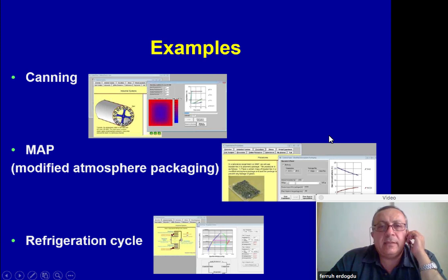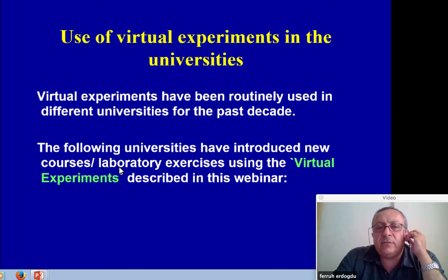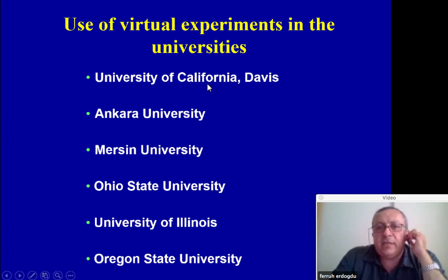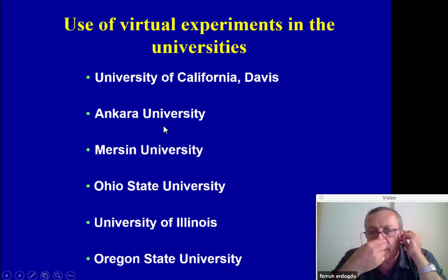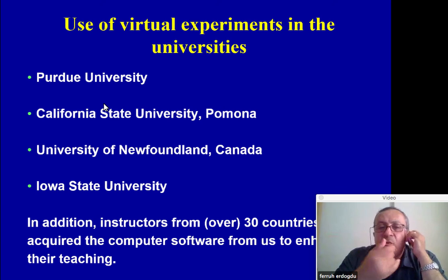Going back to the presentation after these demonstrations: these virtual experiments have been routinely used in different universities over the past decade, including UC Davis, Mersin University, and Ankara University. Other adopters include Ohio State, University of Illinois, Oregon State, Purdue, Cal State Pomona, University of Newfoundland in Canada, and Iowa State. Instructors from over 30 countries have acquired our software to enhance their teaching.